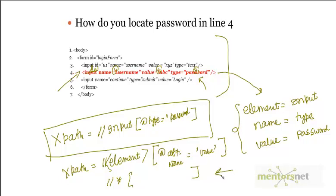The problem with absolute path identification is that if any HTML changes, your XPath will fail and Selenium cannot locate the element. That is why using relative paths with attributes makes your XPath more robust.